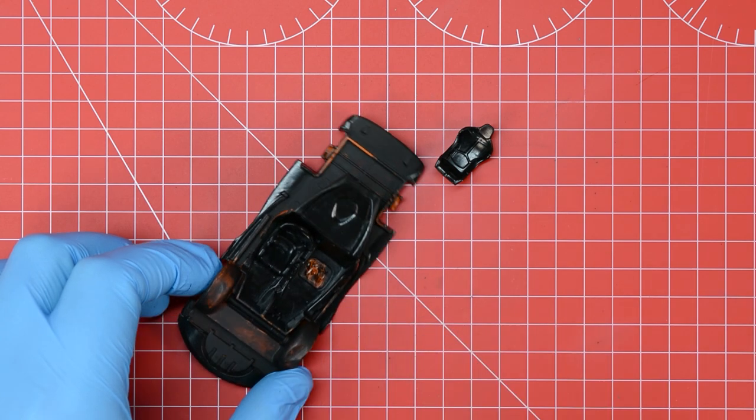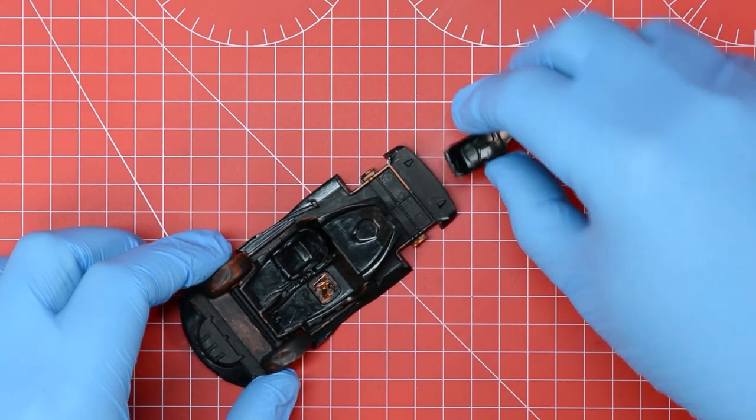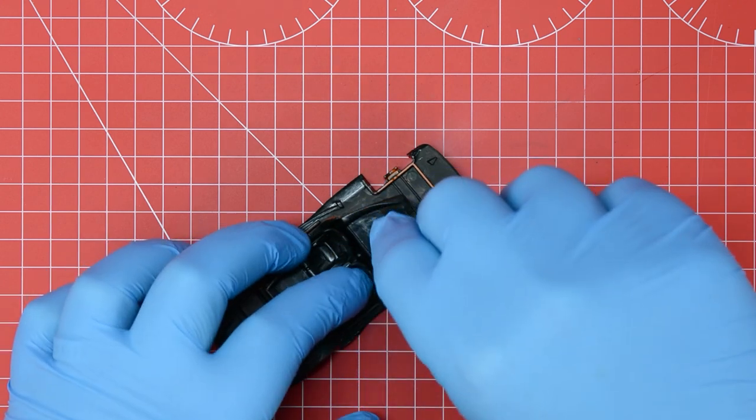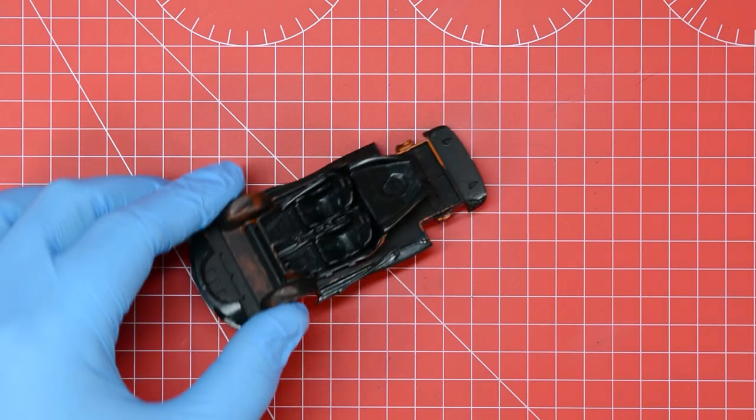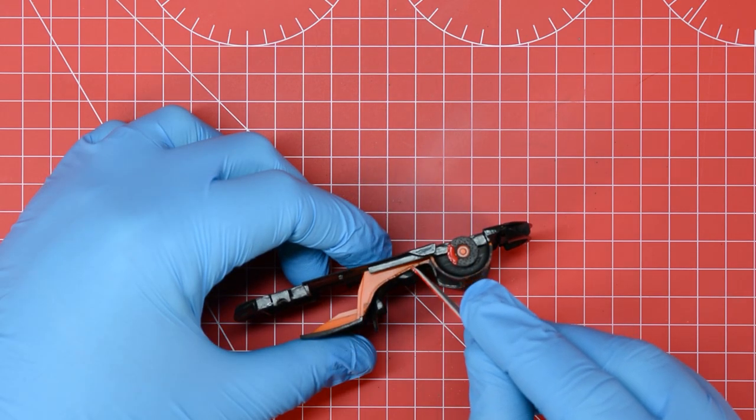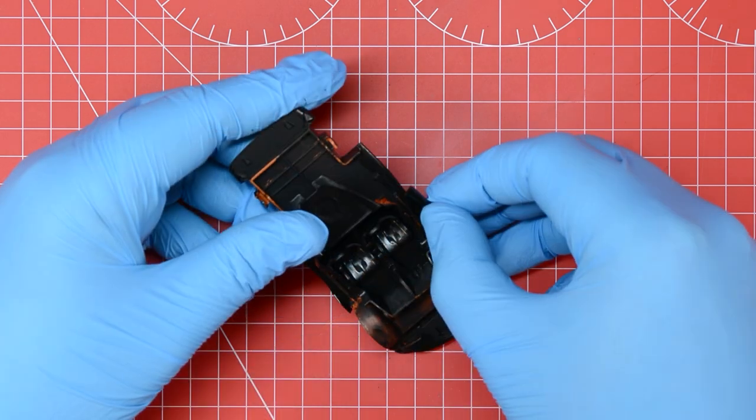The seats are snipped from the frame, cleaned up with the file and any exposed plastic touched up just like we did on the brake discs before being glued into place with a bit of polycement. The door sections are also treated the same, being given a quick clean up before being glued into place on both sides.